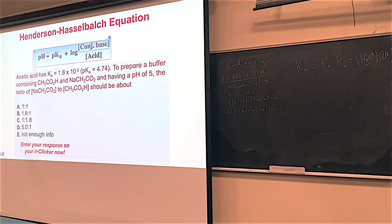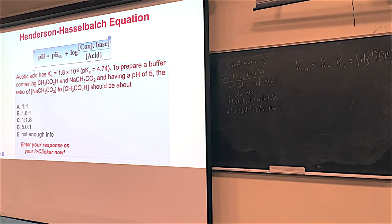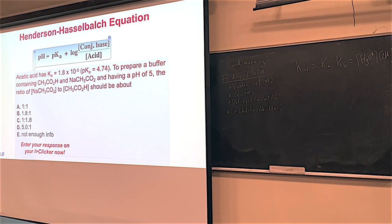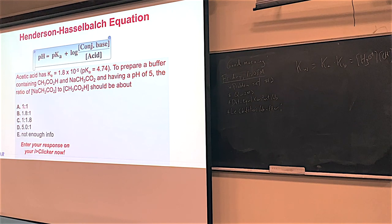We want a pH of 5. A pH of 5 versus 4.74 — that's more basic, right? pH goes up, more base. So you're going to have to add more base relative to acid to make the pH go from 4.74 to 5. The ratio of base to acid: we need more base. The 1-to-1 ratio would not apply — if it were 1 to 1, log of 1 is 0 and your pH and pKa would be the same.